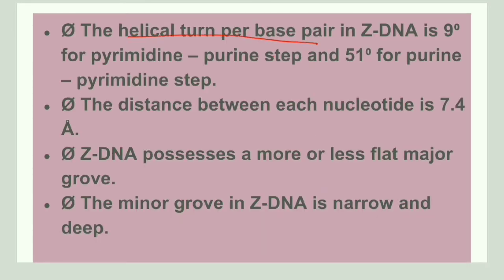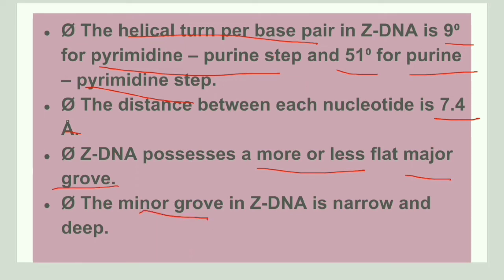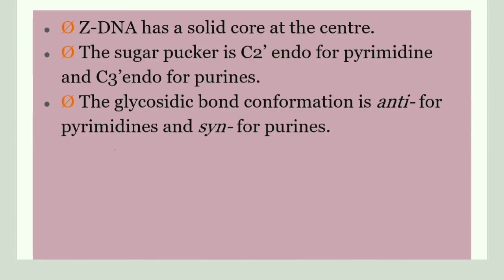The helical rise per base plane in Z-DNA is 9 Å for a pyrimidine-purine step and 51° for a purine-pyrimidine step. The distance between each nucleotide is 7.4 Å. The major groove is more or less flat and the minor groove is narrow and deep. Z-DNA has a solid core at the center, unlike A-DNA which has a hollow core. The sugar pucker is C2'-endo for pyrimidine and C3'-endo for purine; the glycosidic bond is anti for pyrimidine and syn for purine.